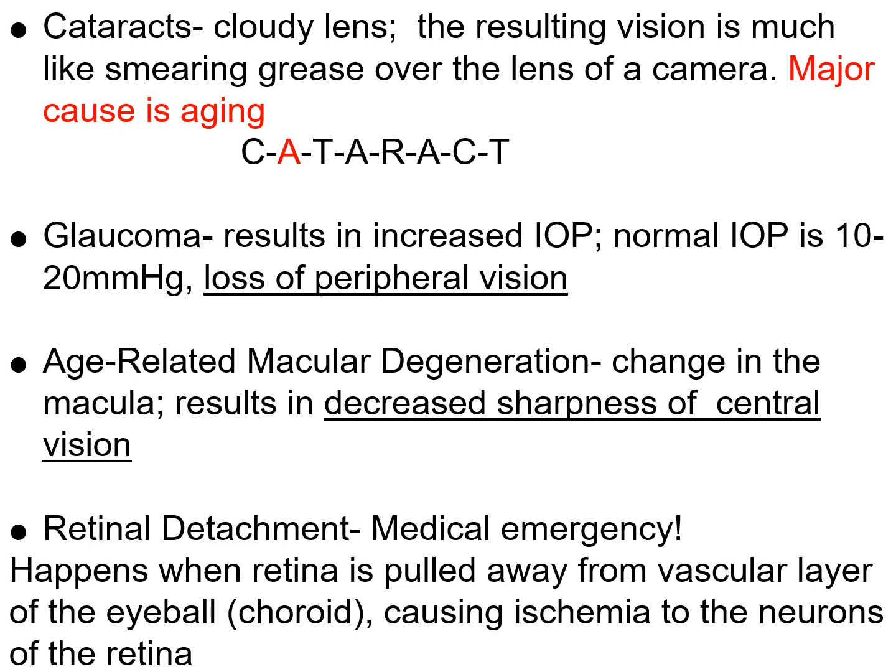Age-related macular degeneration affects the macula, located at the fovea centralis, where sharp central vision occurs. When that area is damaged, there is a decrease in sharpness of central vision, affecting fine detail tasks like threading a needle. Retinal detachment is a medical emergency seen in patients with diabetes and high blood pressure, because it affects the small micro-vessels in the eye. This happens when the retina is pulled away from the choroid, which supplies nutrients and oxygenation, leading to ischemia of the neurons of the retina.